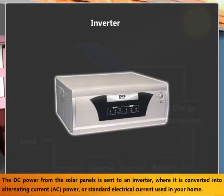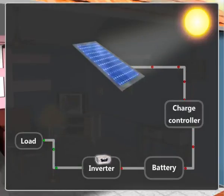Inverter. The DC power from the solar panel is sent to an inverter, where it is converted into alternating current, i.e. AC power, or standard electrical current used in your home.